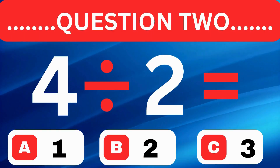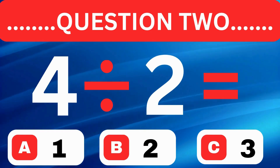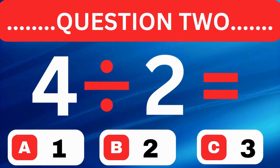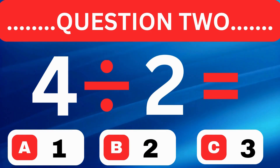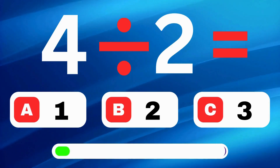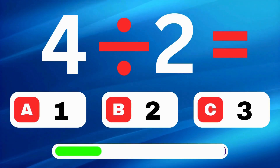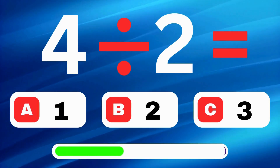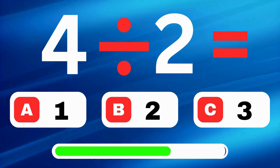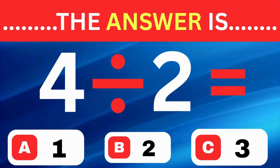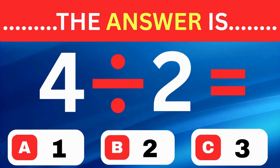What is 4 divided by 2? A, 1. B, 2. C, 3. The answer is option B, which is 2.